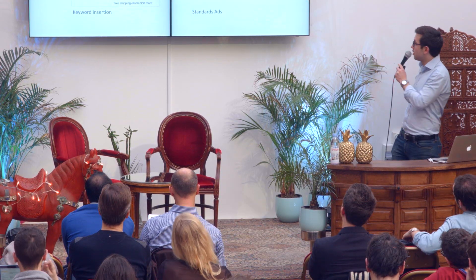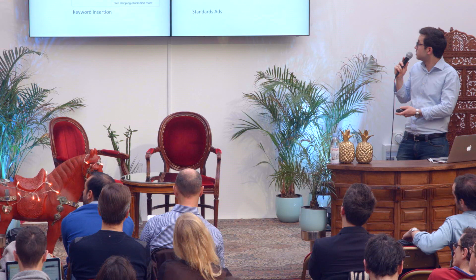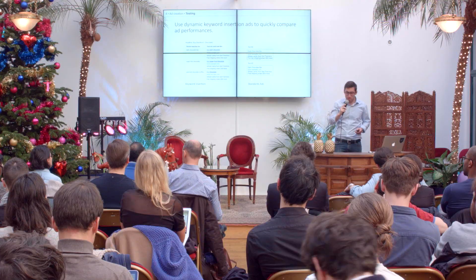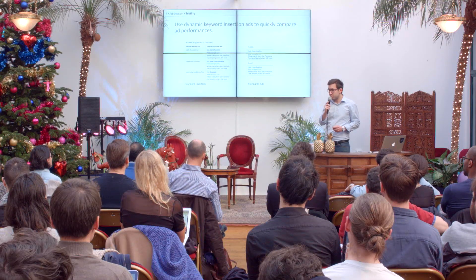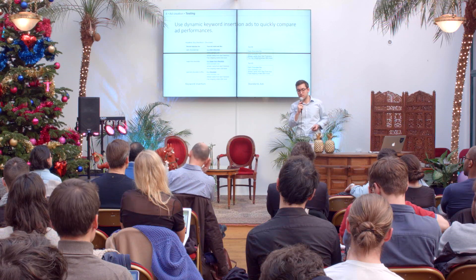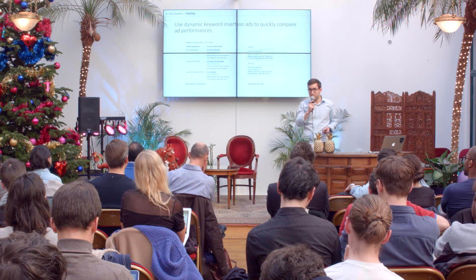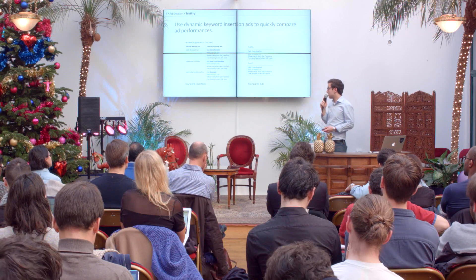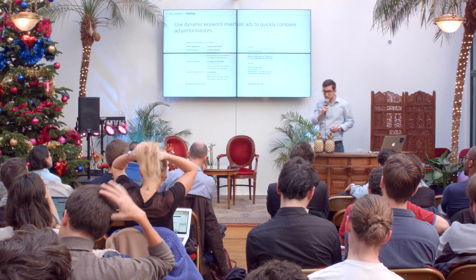On the right, you have two standard tests you can run alongside the keyword insertion ad — look at this as three ads in your ad group. I just changed the second description line: instead of 'free shipping,' I replaced it with 'two-day shipping.' You have to look at performance over 30 days and see which ad performs best according to your objective. If you have a click objective, look at CTR. If you're looking at a conversion objective, optimize your ads for conversion rate.